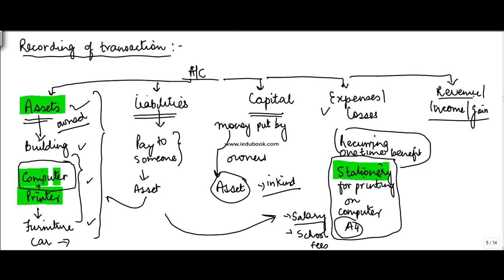Then you have revenue, income, or gains. Suppose you are in the business of selling pens — the money you get from selling the pen is called revenue. The classification of these accounts into five categories is very important from an accounting perspective. The more you know it, the better, because this lays the foundation for everything you do as an accountant, chartered accountant, or commerce professional.